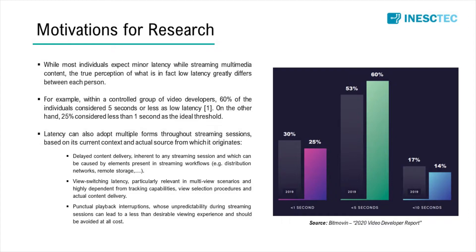For example, we can have delayed content delivery in any streaming session, which can originate from any element within a streaming workflow. We can also have view switching latency, which is particularly relevant in multi-view scenarios and depends on tracking capabilities, view switching procedures, and other aspects. Finally, we can have punctual playback interruptions, which are unpredictable and can arise from computing capabilities, content delivery, or any other aspect occurring during a streaming session.